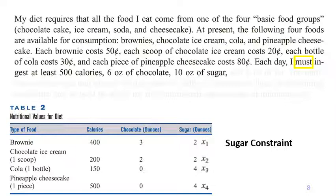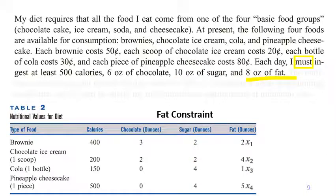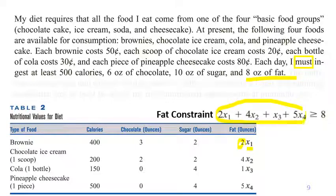The problem also says you must ingest at least 10 ounces of sugar. For each brownie you get 2 ounces of sugar, and you eat x1 brownies, so the total sugar from brownies is 2x1. For each scoop of chocolate ice cream you get 2 ounces of sugar times how many scoops you eat, and so on — giving the sugar constraint. Finally, the problem says you must ingest at least 8 ounces of fat: from each brownie you get 2 ounces of fat times how many pieces you eat, and so on, giving the fat constraint with total fat greater than or equal to 8.